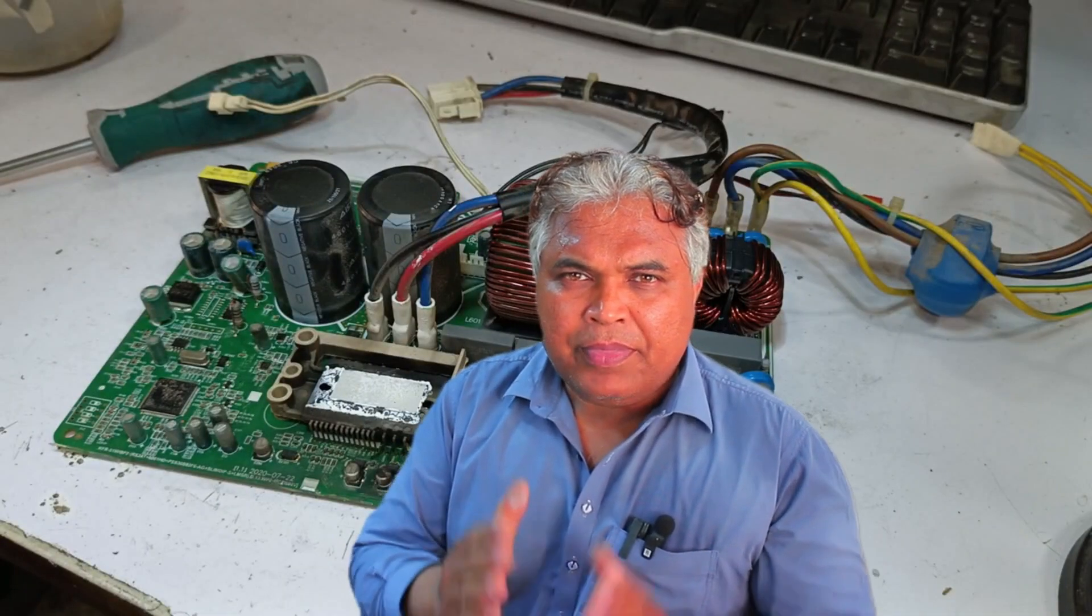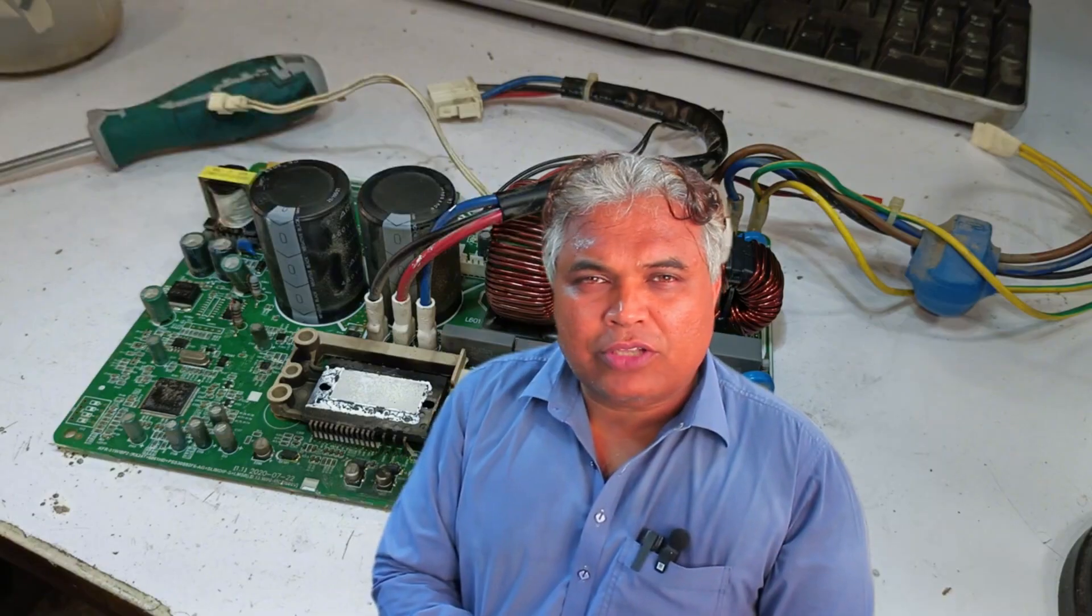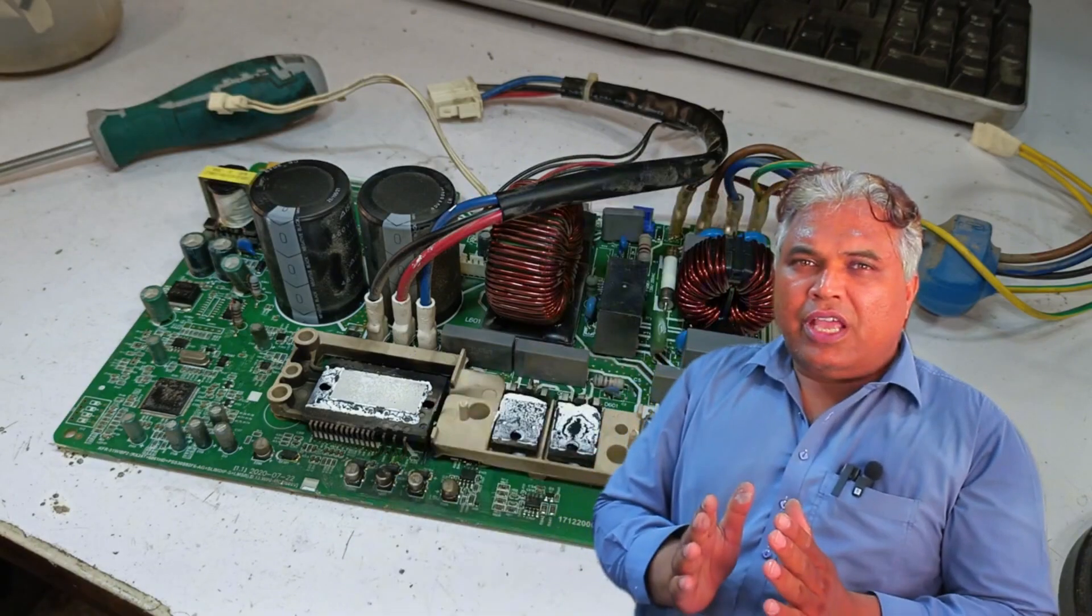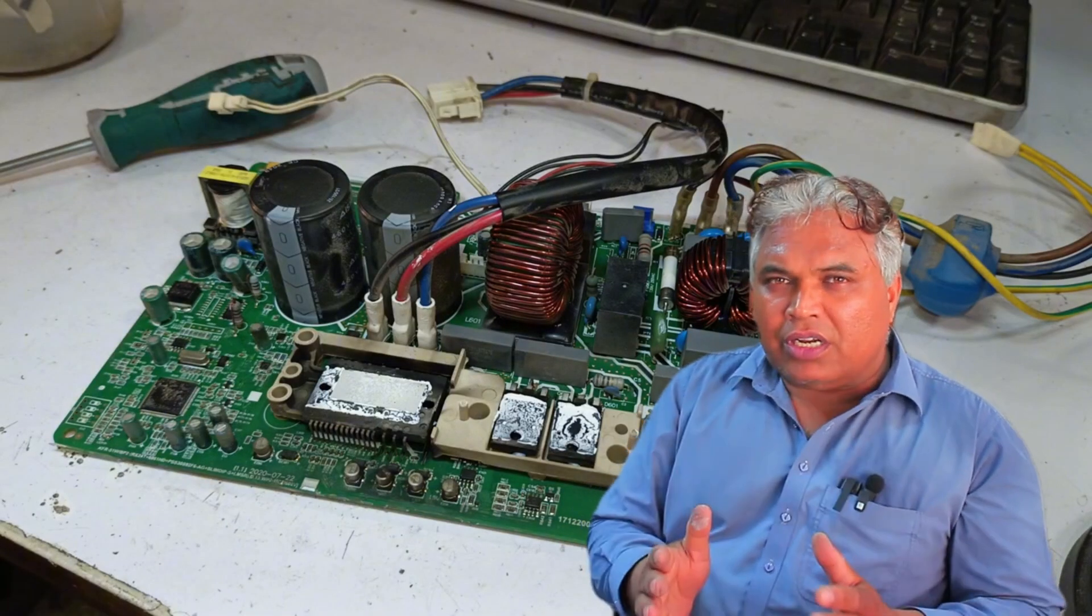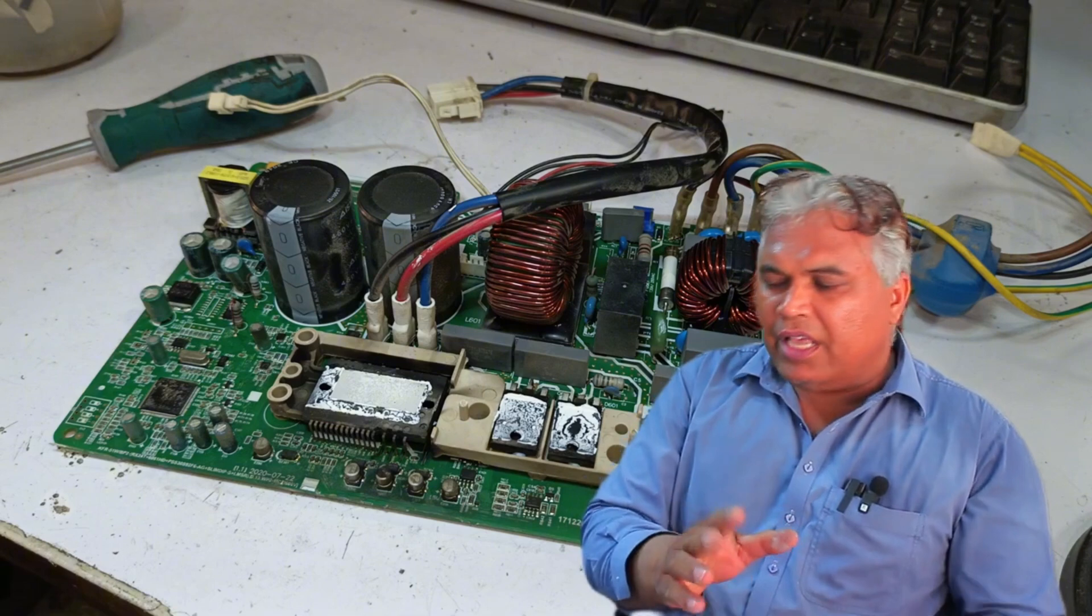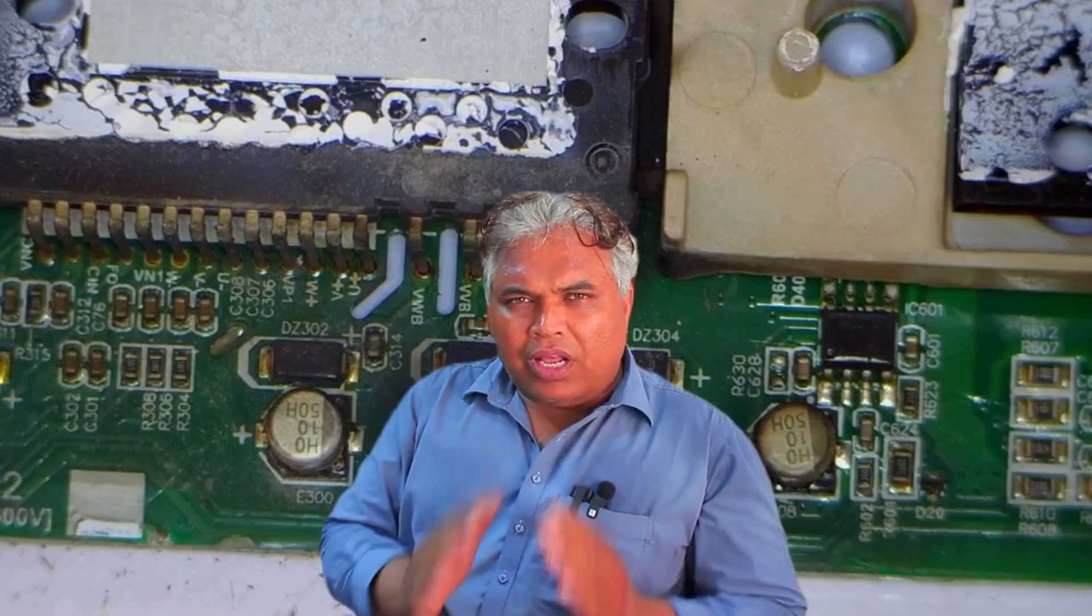The issue arose because the customer washed the unit with a pipe, and after washing, the P0 error started appearing. When you service a unit and don't remove the indoor or outdoor PCB, there's a chance that water can get inside. If you turn it on immediately after washing, there's a possibility that it could get damaged. This is what happened here as well.